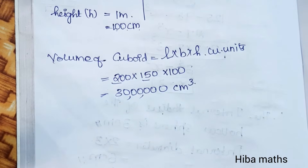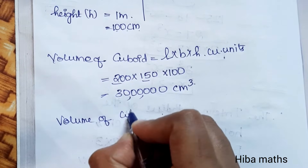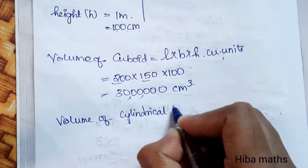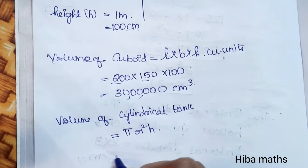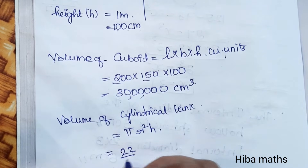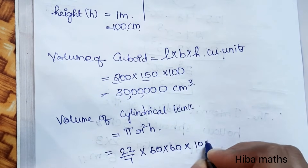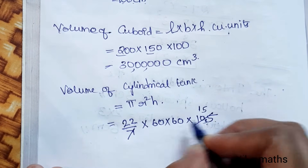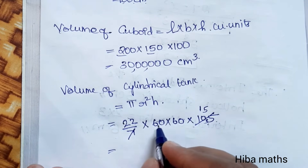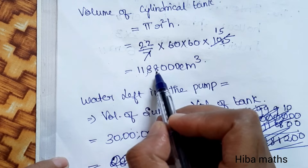Now we calculate the volume of the cylindrical overhead tank using the formula volume of cylinder = π r² h. Using the values and the 22/7 approximation for π, with r = 60 and h = 105, working through the multiplication, the volume of the cylinder is 11,88,000 cubic centimeters.